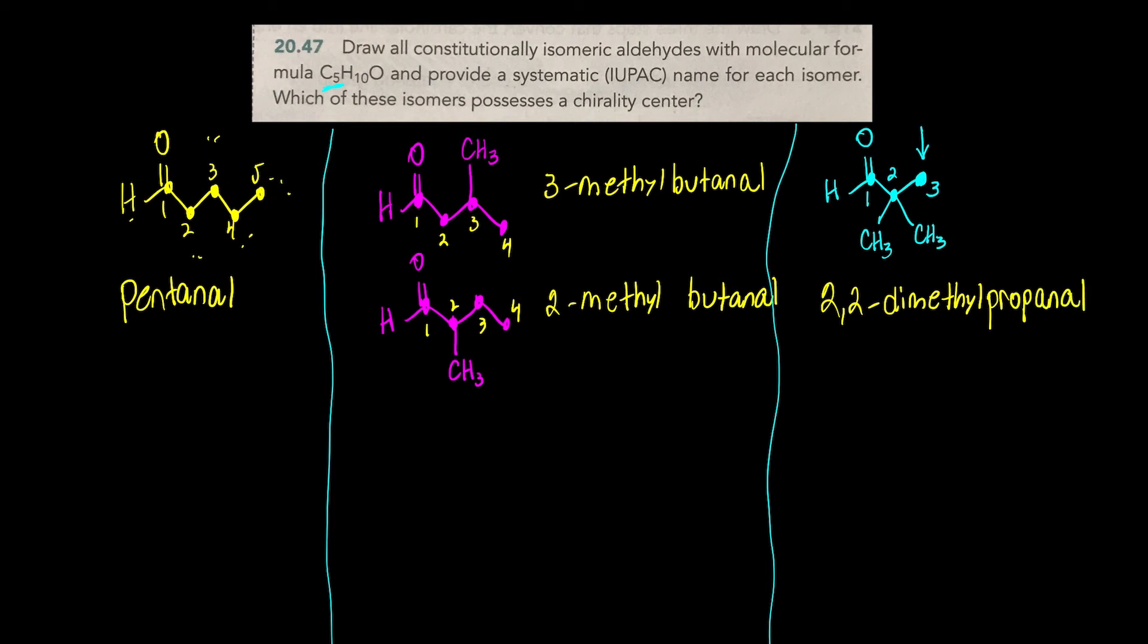Propanal, remember, is three carbons. And AL is short for Albert or aldehyde in this case. So one, two, three, four molecules. Now the second question says, which one possesses a chirality center?